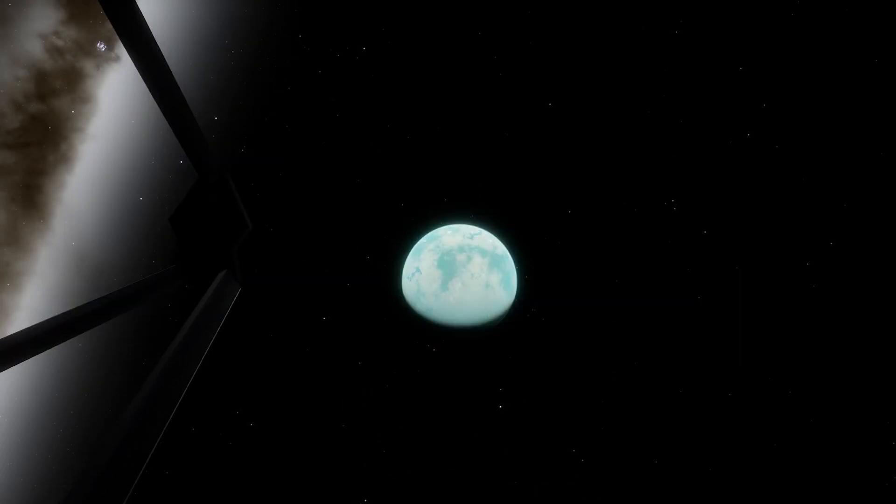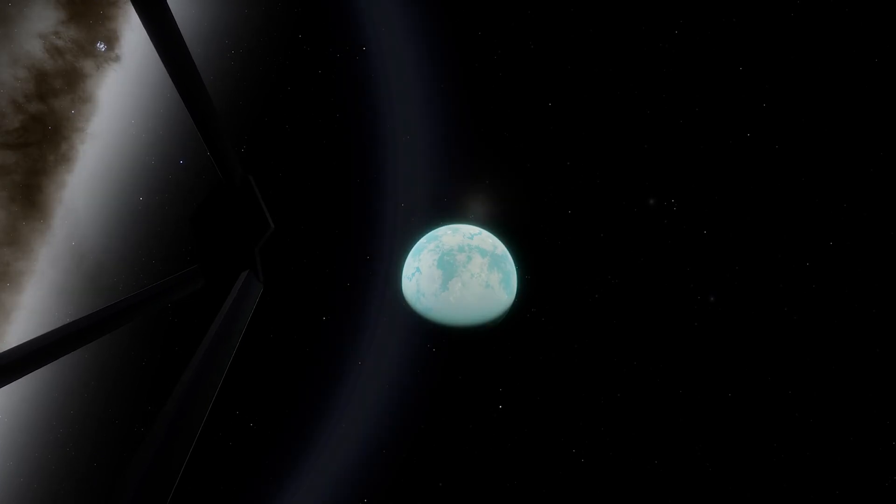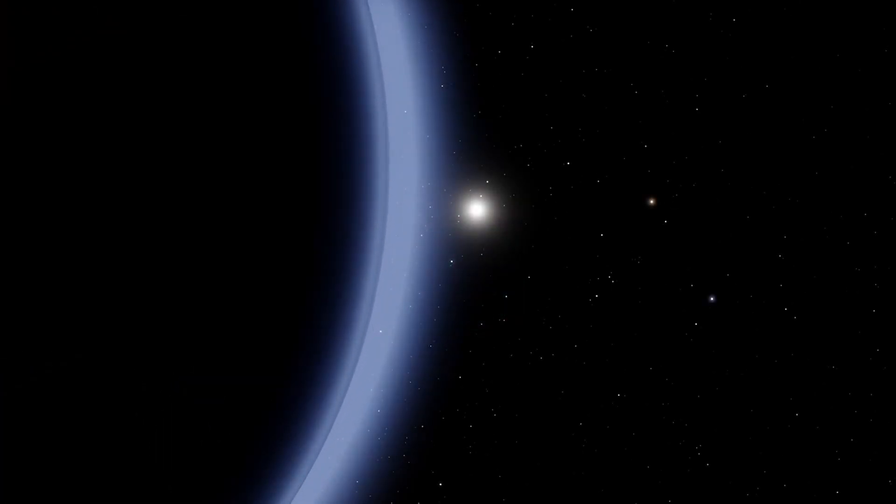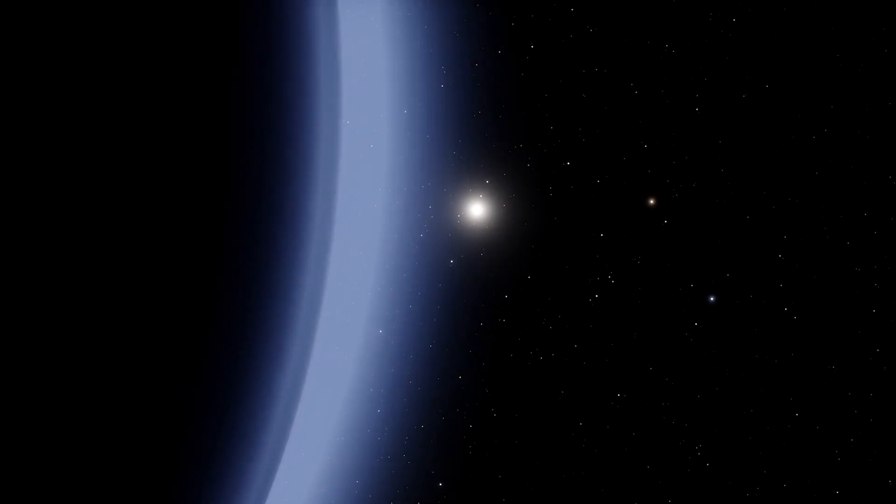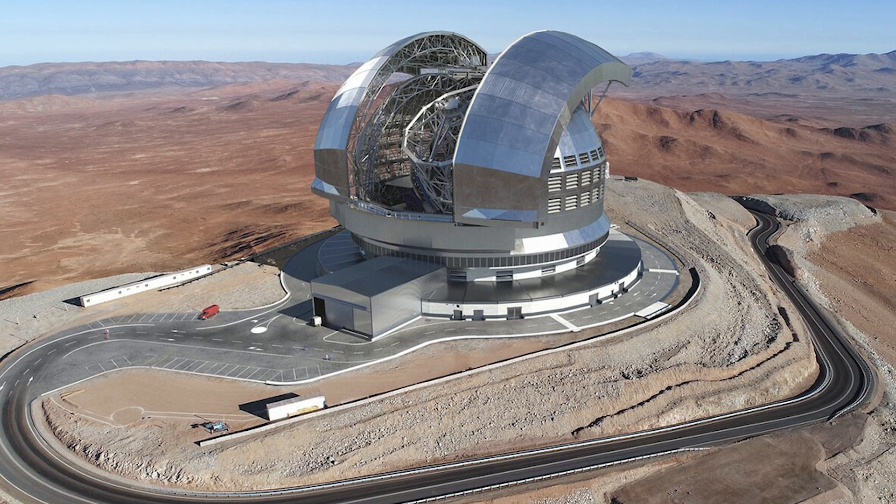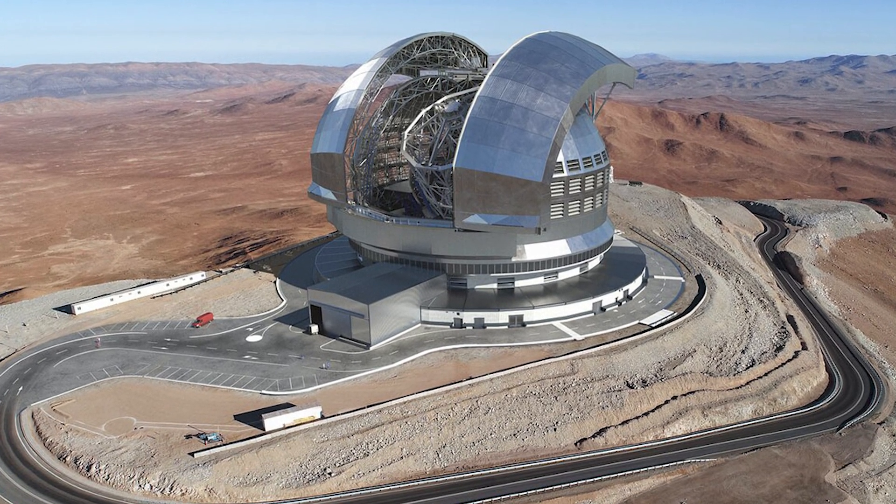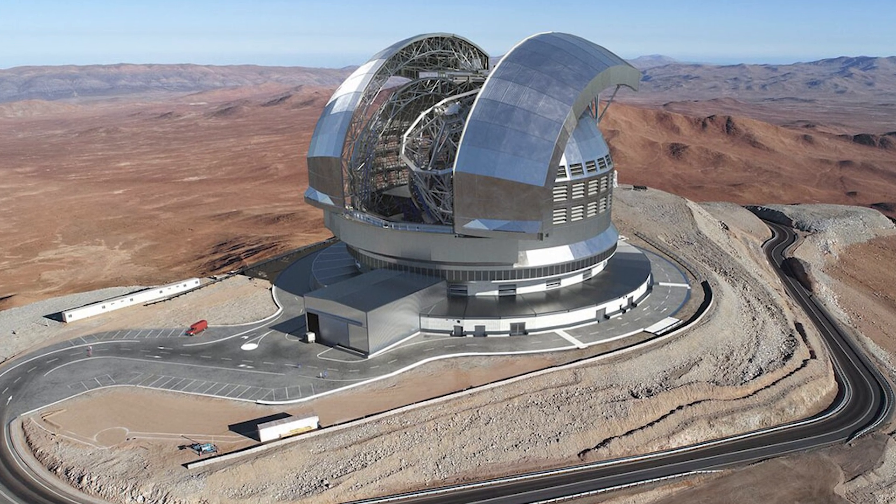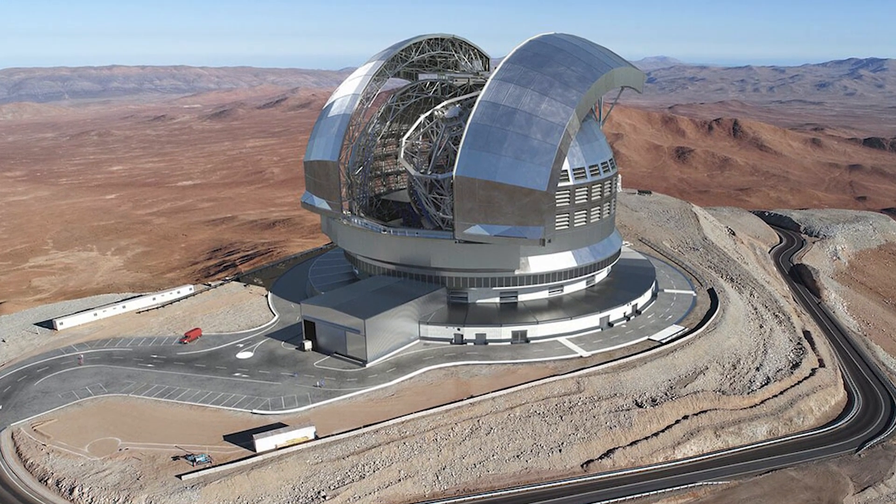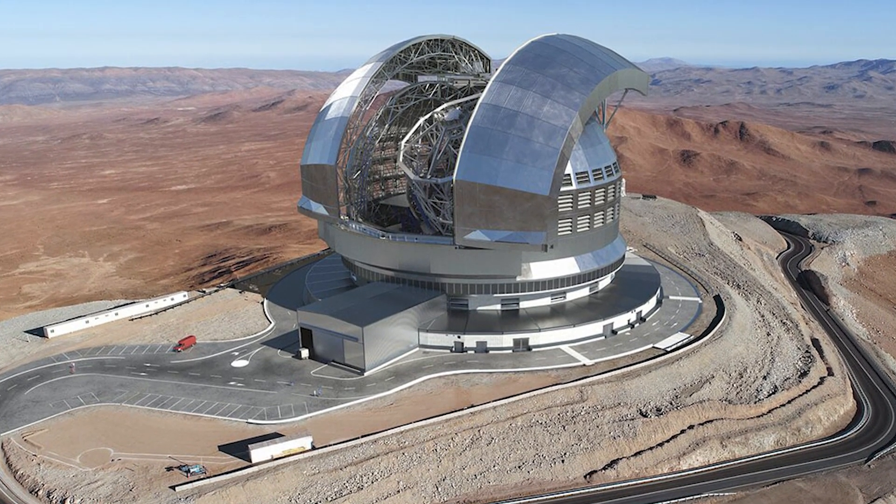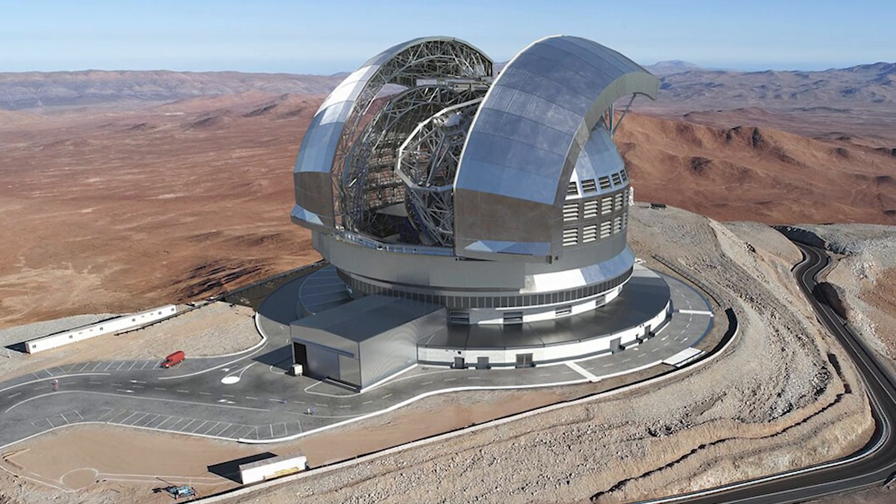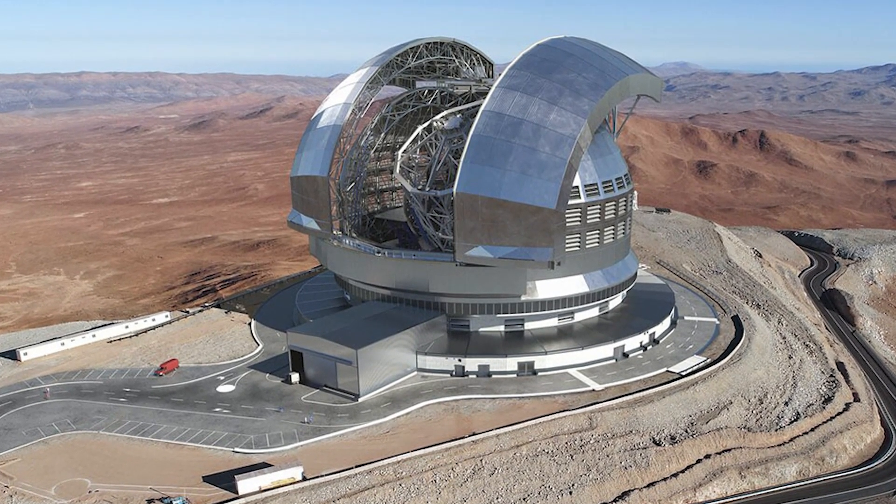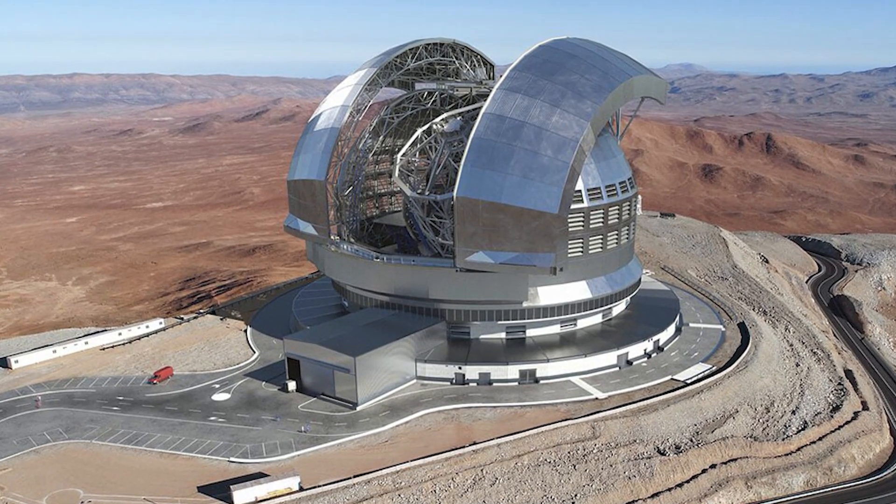It is important to keep in mind that the JWST cannot explore all potential habitable worlds, as it has limited capabilities and can only observe some of the exoplanets closest to Earth. Therefore, astronomers are turning to ground-based observatories such as the Extremely Large Telescope, the ELT, which is expected to become operational in 2028, and allow for a deeper investigation of the atmospheric structure of distant exoplanets.